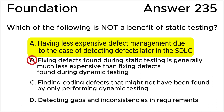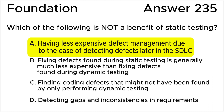Answer B is wrong because fixing defects found during static testing being generally much less expensive than fixing defects found during dynamic testing is a benefit of static testing. Answer C is wrong because finding coding defects that might not have been found by only performing dynamic testing is a benefit of static testing. Answer D is wrong because detecting gaps and inconsistencies in requirements is also a benefit of static testing.